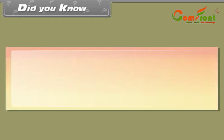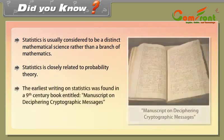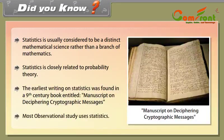Did You Know: statistics is usually considered a distinct mathematical science rather than a branch of mathematics. It is closely related to probability theory. The earliest writing on statistics was found in a 9th-century book entitled 'Manuscript on Deciphering Cryptographic Messages.' Most observational studies use statistics.